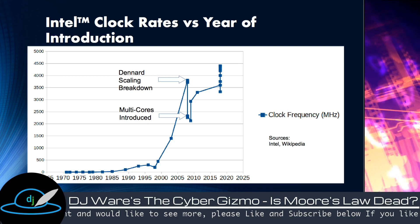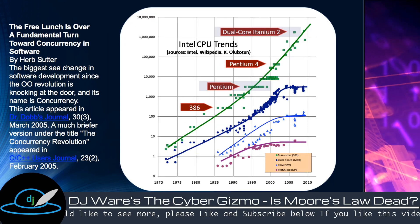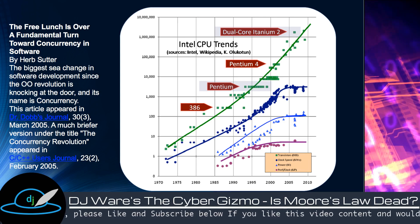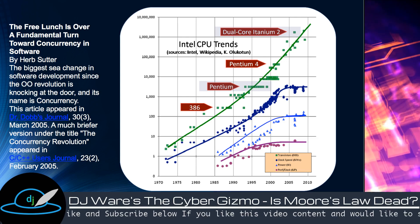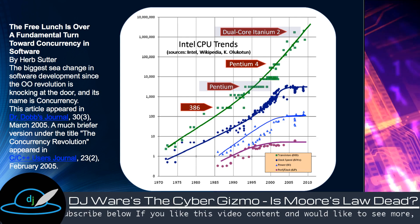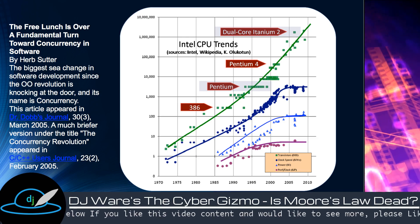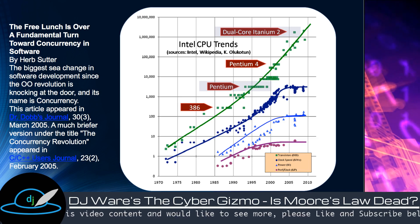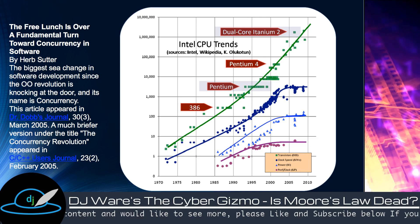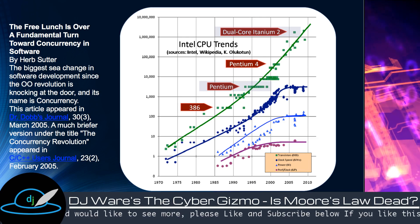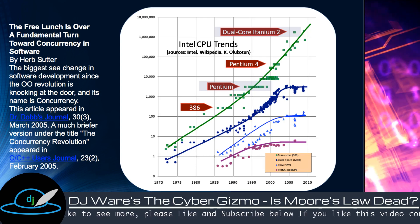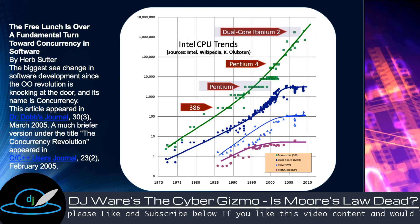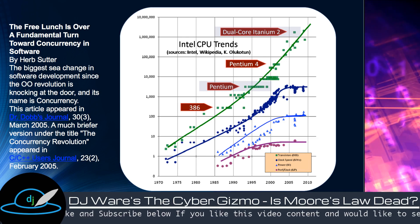That's the world we live in, and it prompted Herb Sutter to write an article for Dr. Dobbs in 2005 called 'The Free Lunch Is Over,' arguing that we need to move to concurrent programming. He plotted the same thing: the green curve is Moore's Law doubling every two years, but when you plot clock speed, power, and performance per clock, the last three all flatline. That's why we're into multiple cores and need to find ways to better take advantage of them.